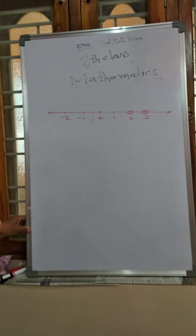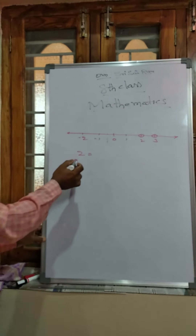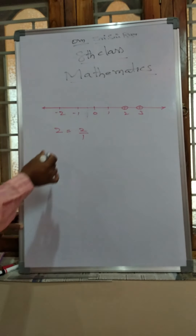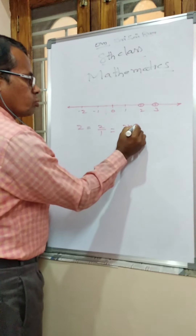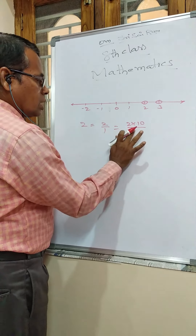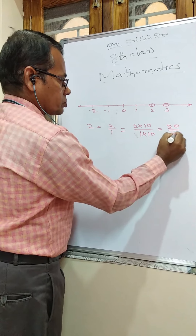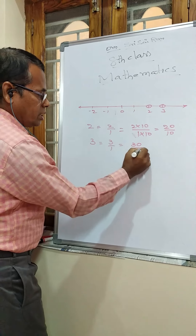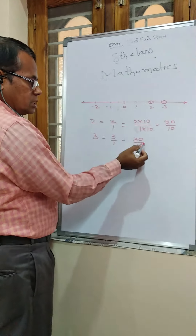How many rational numbers are between 2 and 3? Suppose 2 — 2 is a natural number, whole number, and integer, so 2 is a rational number, written as 2/1. If 2 is multiplied on numerator and denominator by 10, we get 20/10. Similarly, 3 can be written as 3/1, which gives 30/10.